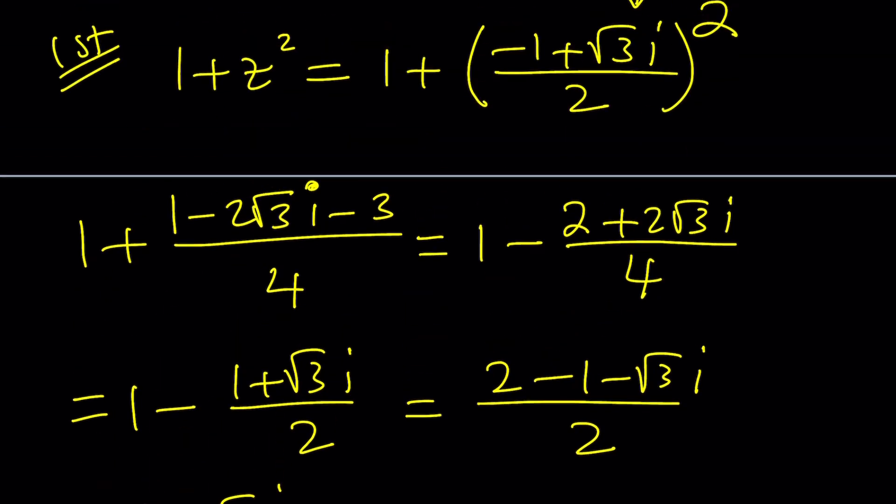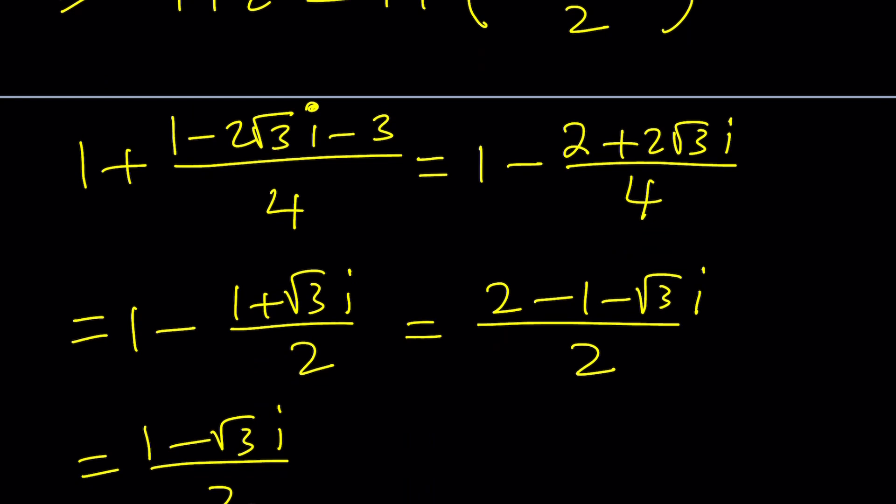Obviously this fraction can be simplified. I can write it as 1 plus root 3i over 2, then making a common denominator, 2 minus 1 minus root 3i over 2, and finally this becomes 1 minus root 3i over 2. We started with something like this and we got the opposite. That's kind of interesting. I take z, square it and add 1, then I get the opposite of z.